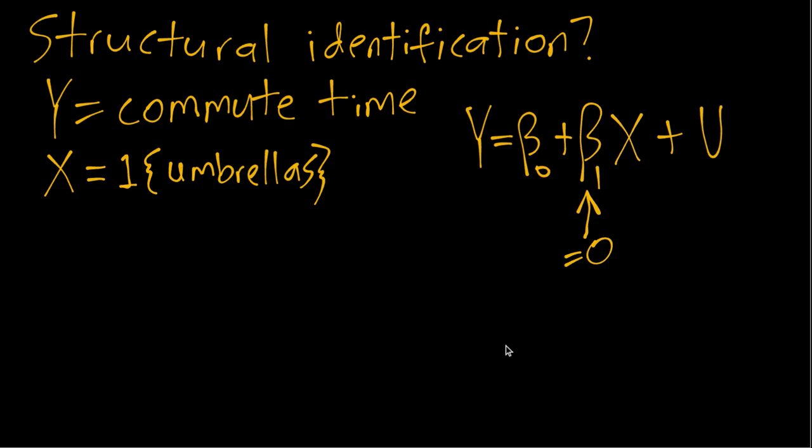Umbrellas are related to rain and rain does actually affect commute times. So remembering that u, the structural error term, contains all of the other things that affect commute times besides umbrella carrying. Rain would be part of our u variable, or in particular the effect of rain on commute time.